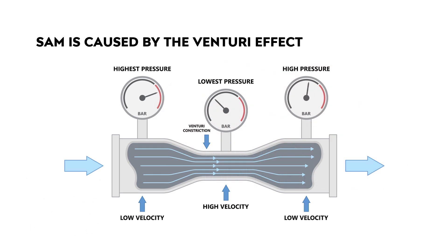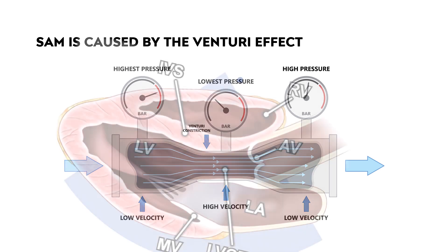SAM is caused by the Venturi effect, or Bernoulli principle. The narrow section of the LVOT has higher velocity and lower pressure. Therefore, anything that further lowers the pressure in the LVOT will worsen the obstruction due to the suction effect leading to SAM, such as narrowing of the LVOT size or speeding up of blood flow.